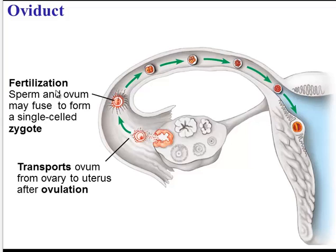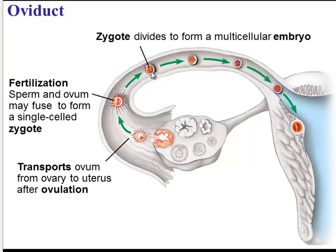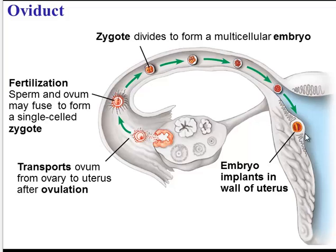A zygote is a single cell that has all the genetic information from the mother and the father. As that zygote continues to move along the oviduct, it's going to divide — here it's divided into two cells, then four, and so on. So by the time it reaches the uterus, it's now a little ball of cells, a multicellular embryo. And in the uterus, that embryo will implant — it will dig into the wall and set up shop there.